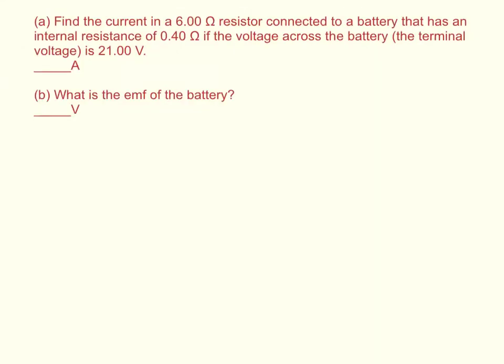Find the current in a 6 ohm resistor connected to a battery that has an internal resistance of 0.4 ohms if the voltage across the battery, the terminal voltage, is 21 volts,